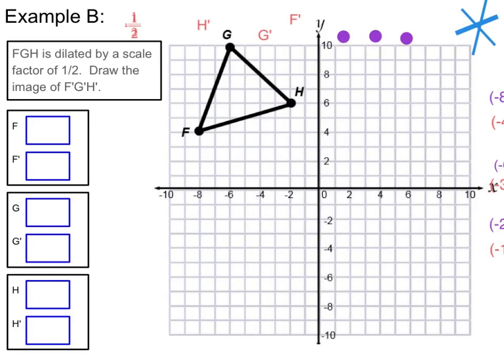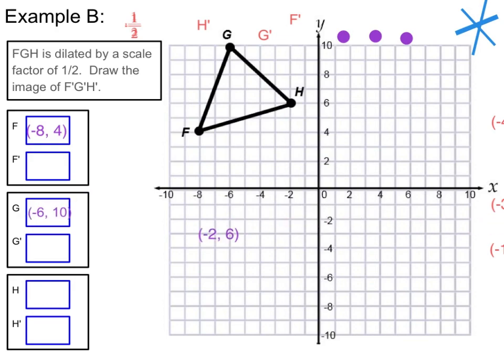Here we are at example B. It says FGH is dilated by a scale factor of 1 half. Draw the image of F prime, G prime, H prime. We've got to take a look at our figure on the coordinate plane. We're going to be multiplying by a scale factor of 1 half, because multiplying is how we perform dilation. So I'm going to take a look at my graph. I've got F at negative 8, positive 4; G at negative 6, positive 10; and H at negative 2, positive 6.